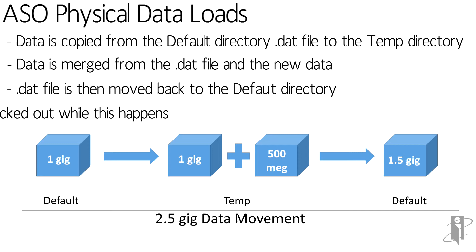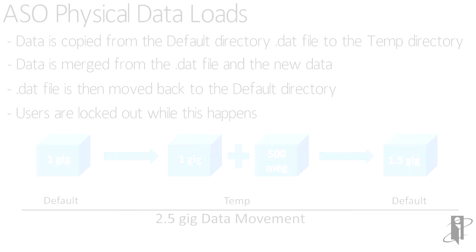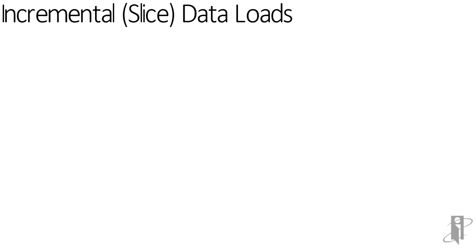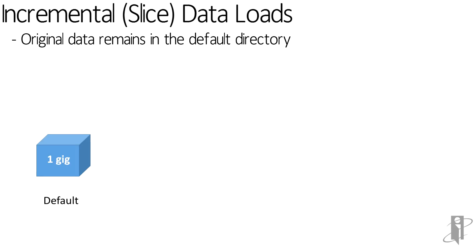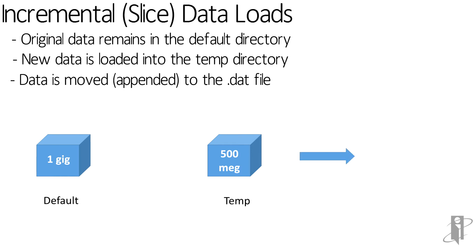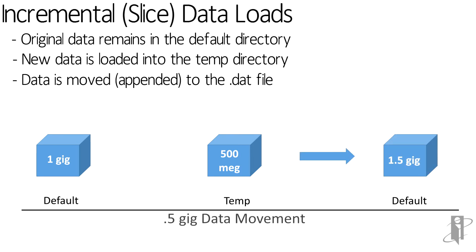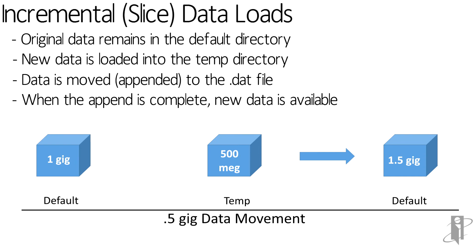During all of that time, the users are locked out and they can't get at the data. But what happens if we actually use a slice? The original data remains in the default directory. New data is loaded into the temp directory — our 500 meg. The data is then appended to the dat file, so just that 500 meg is moving into the default directory, and it gets put on the end of the dat file. When the append is complete, the new data is available.